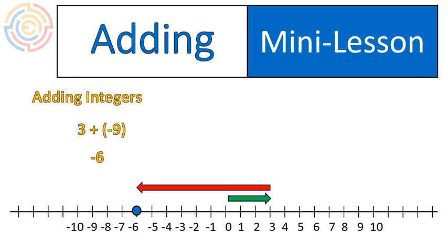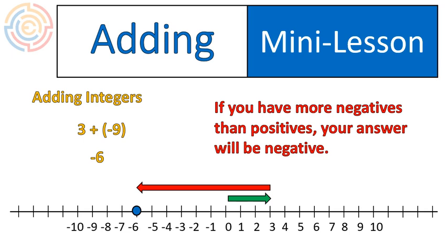So just keep in mind this. If you have more negatives than positives, your answer is going to be negative. That's just a way of thinking about it. In this one, there's 9 negatives, so that arrow is a lot longer. There's more negatives than positives. There's only 3 positives, so your final answer is going to end up being negative.